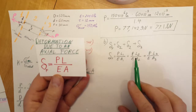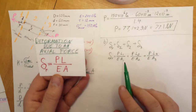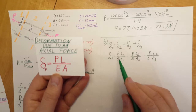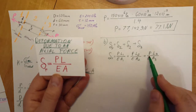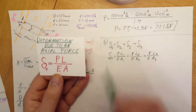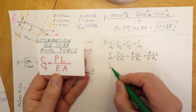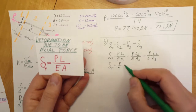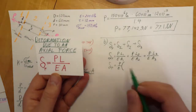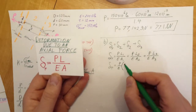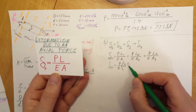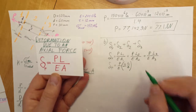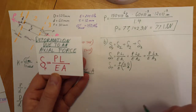Since P and E are the same for all three sections, we factor them out. The total elongation becomes P over E, multiplied by the sum of L1 over A1 plus L2 over A2 plus L3 over A3.